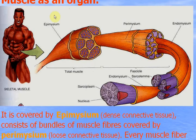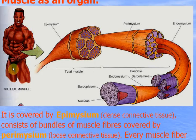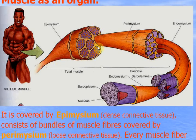Muscle as an organ — all 600 individual muscles you have studied in human anatomy have the same plan of structure and the same mechanism of contraction. They are covered by dense connective tissue called epimysium. They consist of bundles of muscles covered by loose connective tissue called perimysium.